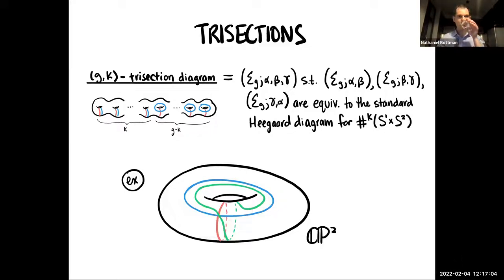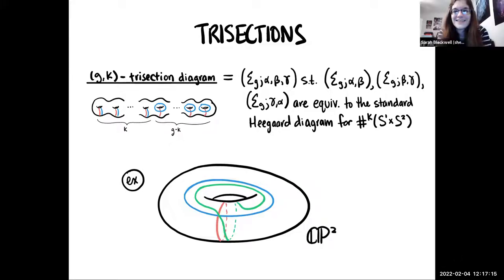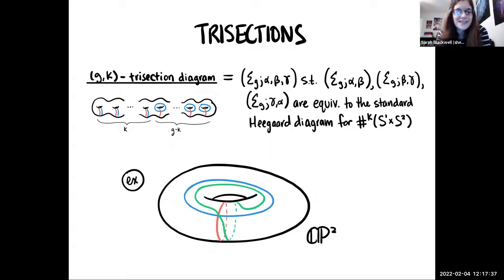Now I'm going to attempt to prove to you that CP2 does admit this trisection. I'm not going to prove this in grueling detail, but I'll give you all the tools you need to go home and write out the details yourself. The statement is that CP2 admits a (1,0)-trisection — (1,0) because the four-dimensional pieces are going to be four-balls, as we will see.